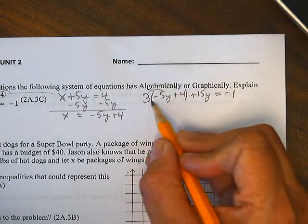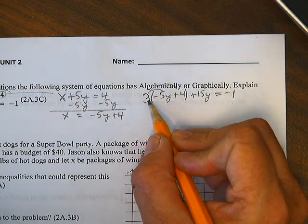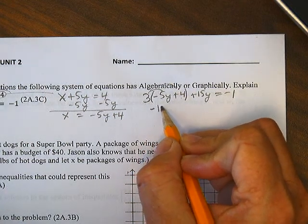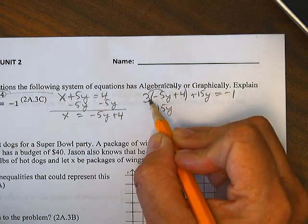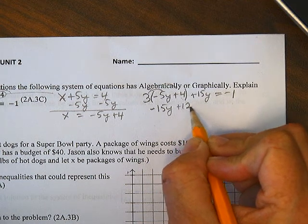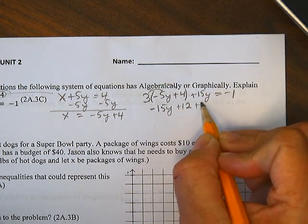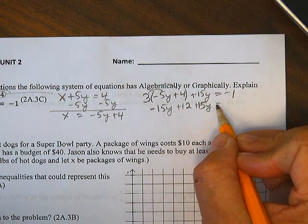We distribute the 3 now to the negative 5 and the 4. So 3 times negative 5 is negative 15y and 3 times 4 is 12 plus the 15y equals negative 1.